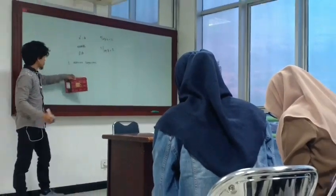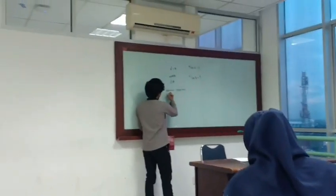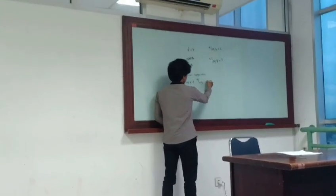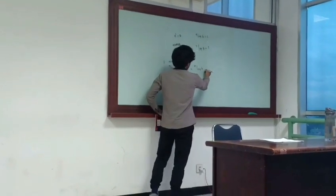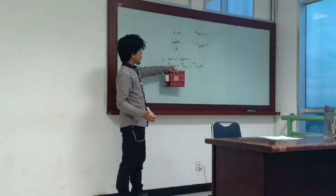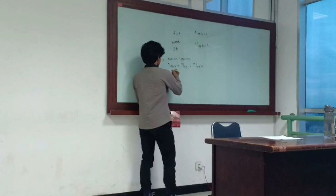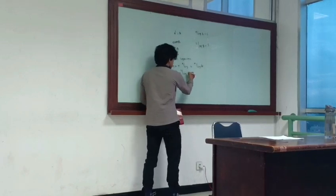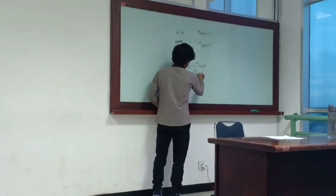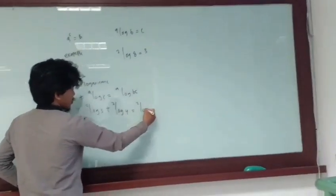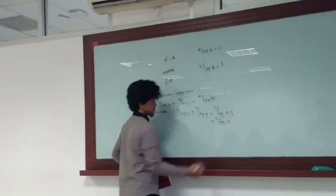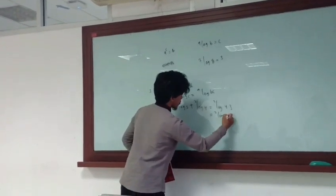I will write the model for the addition property of logarithms: A log B plus A log C equals A log B times C. This is the model of the addition property of logarithms. Example: 2 log 3 plus 2 log 4 equals 2 log 4 times 3. This is an example of the addition property of logarithms.